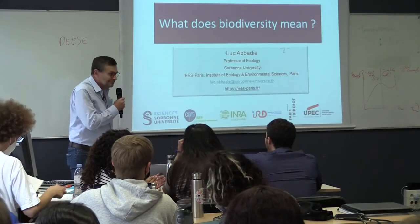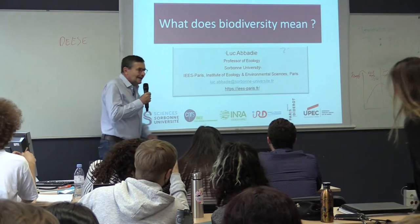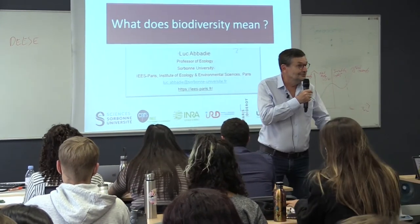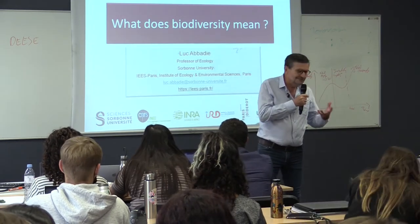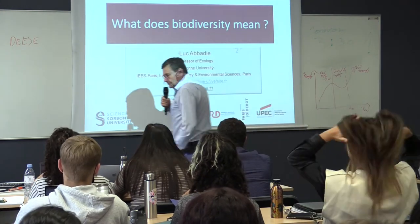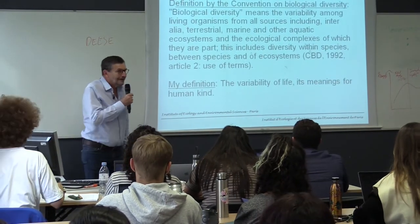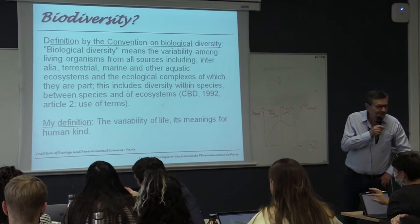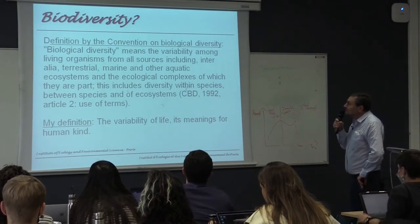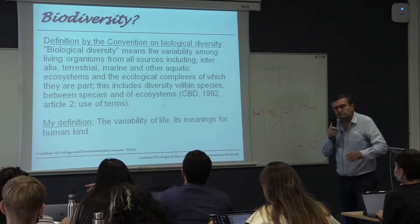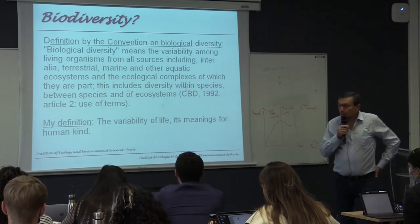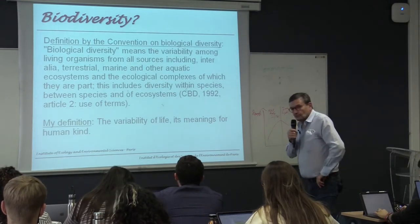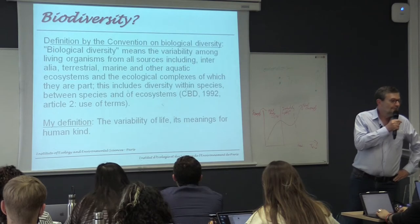Good afternoon everyone. I'm going to speak about biodiversity and especially about the meaning of the word biodiversity. What does it mean? What is behind this word? We use this word every day but finally it is not very clear. To start, we can look at the official definition given by the Convention on Biological Diversity: biodiversity means the variability among living organisms — plants, microbes, animals — in aquatic and terrestrial ecosystems. The key word is variability, and this concept was proposed during the Rio Conference in 1992.